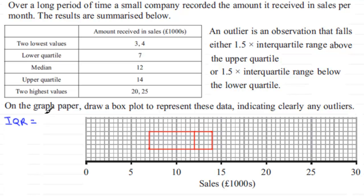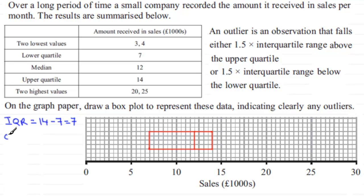The interquartile range is the upper quartile minus the lower quartile — that's 14 minus 7 — so the interquartile range is 7.